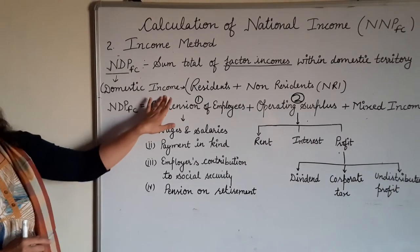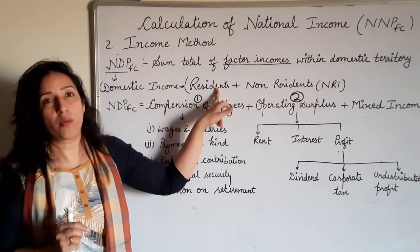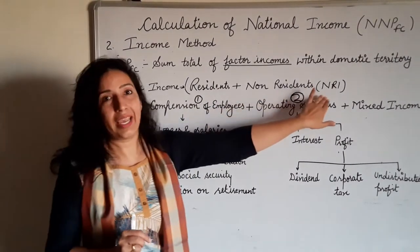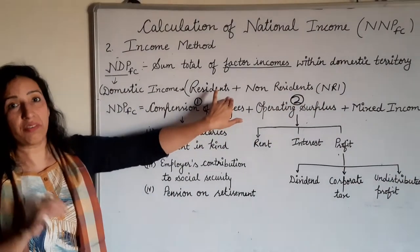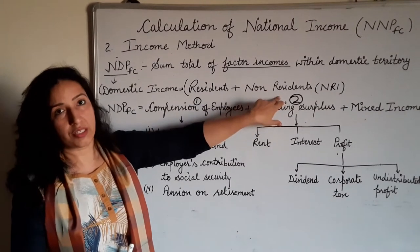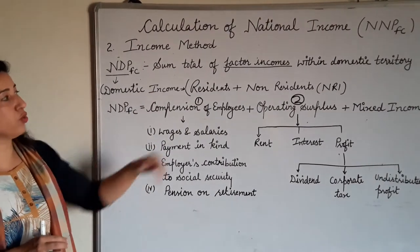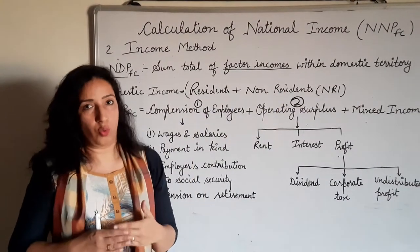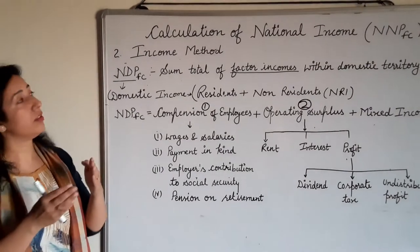This is called domestic income. Domestic income includes income earned by both the normal residents and non-residents of a country. The NRI concept has already been explained in the previous chapter regarding what we mean by resident and non-resident of a country. So domestic income includes the income of residents and the income of non-residents also.